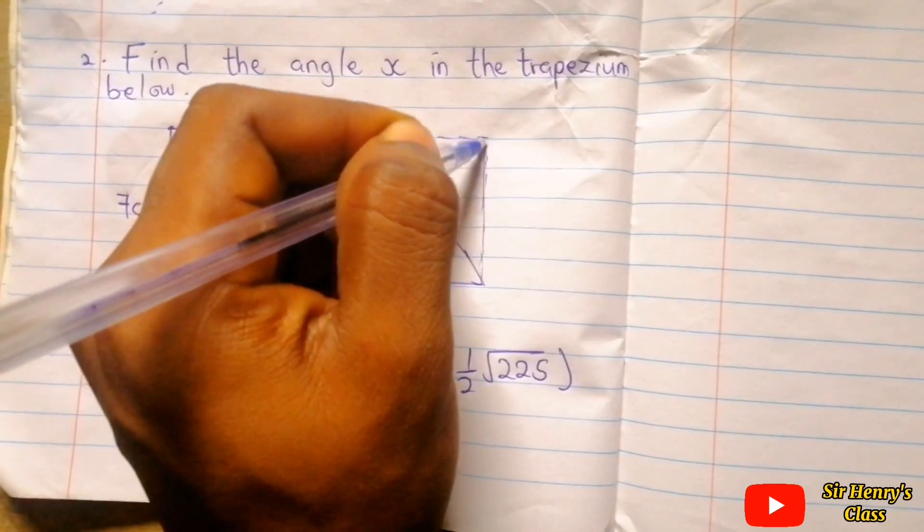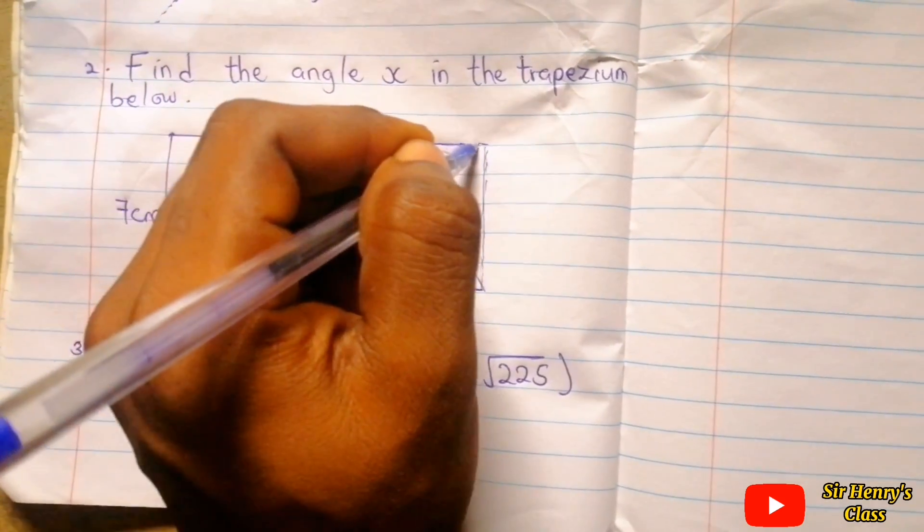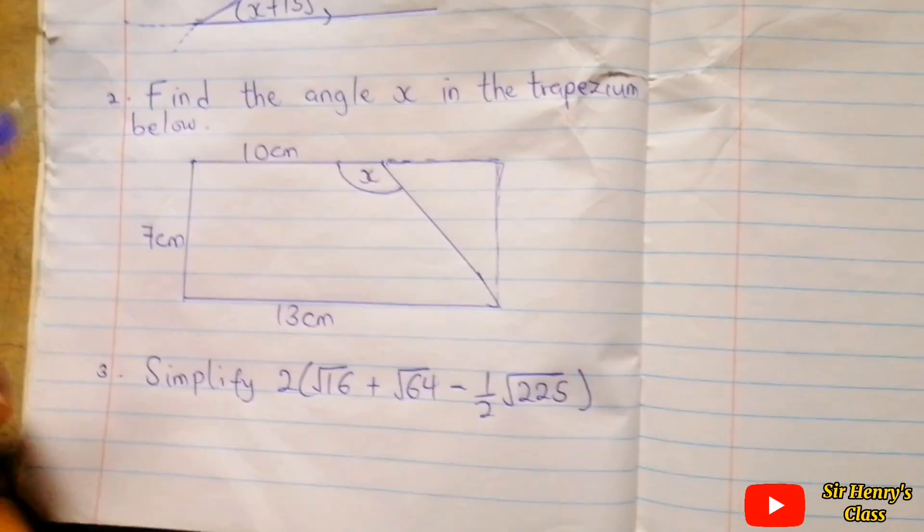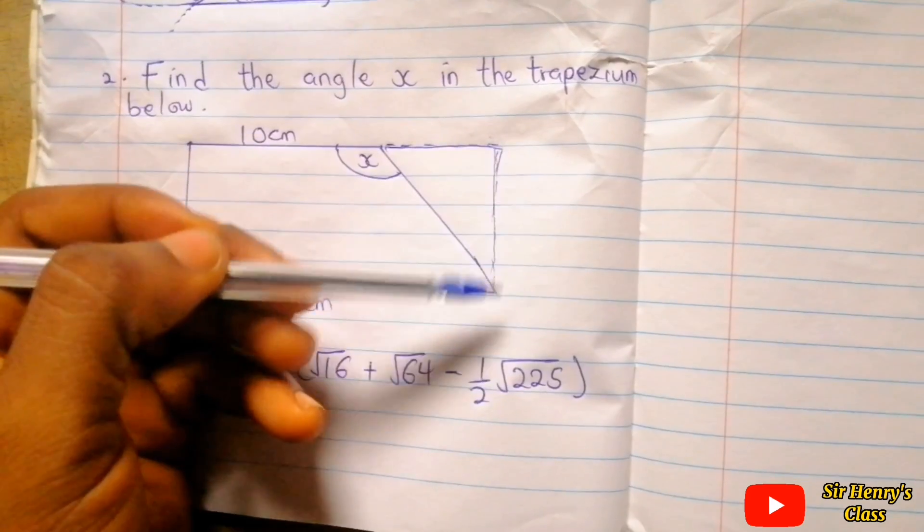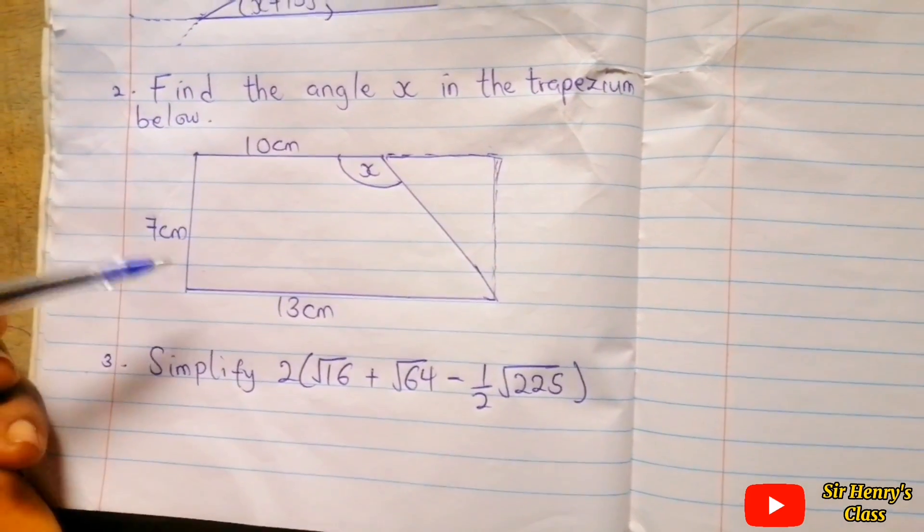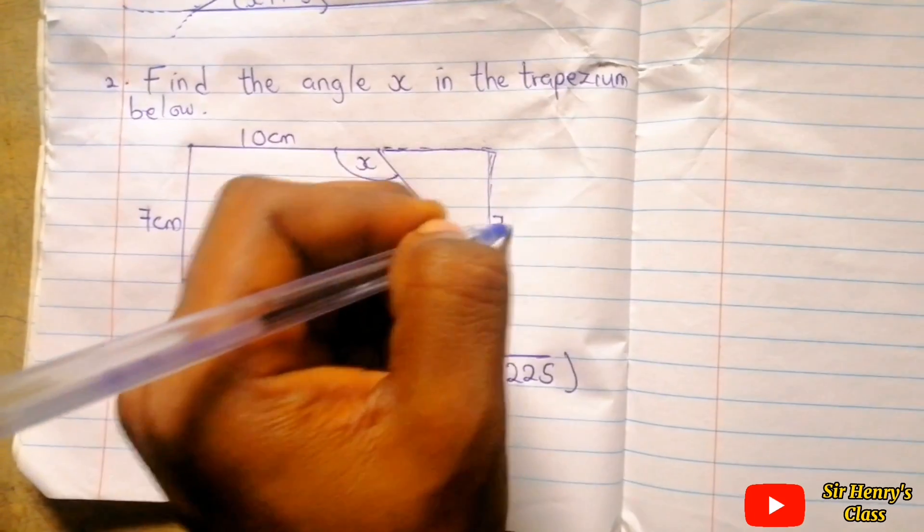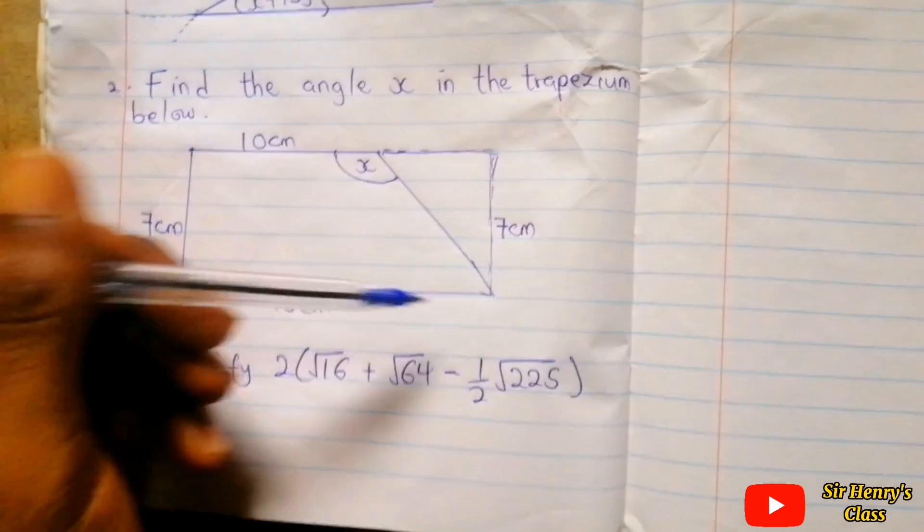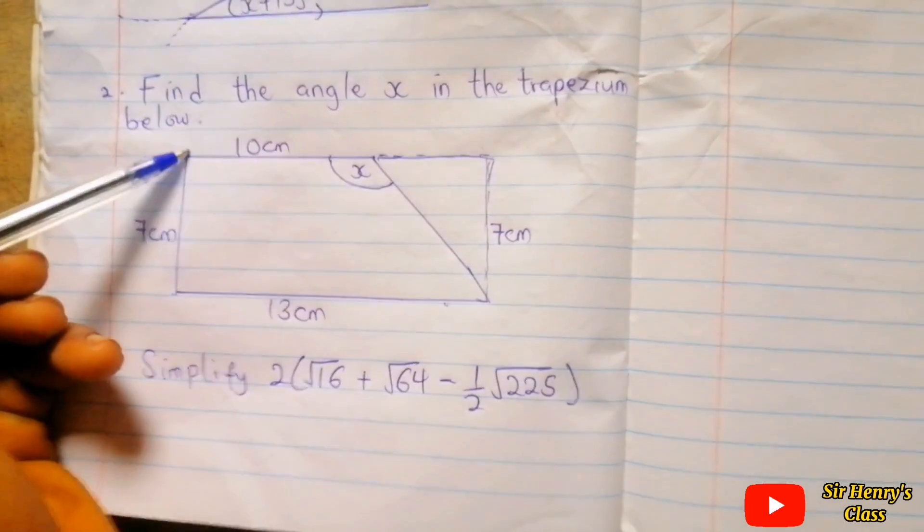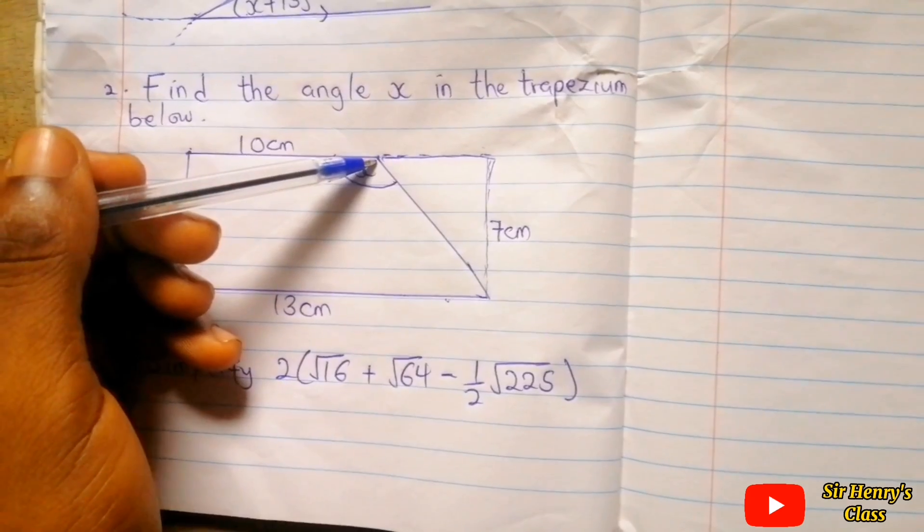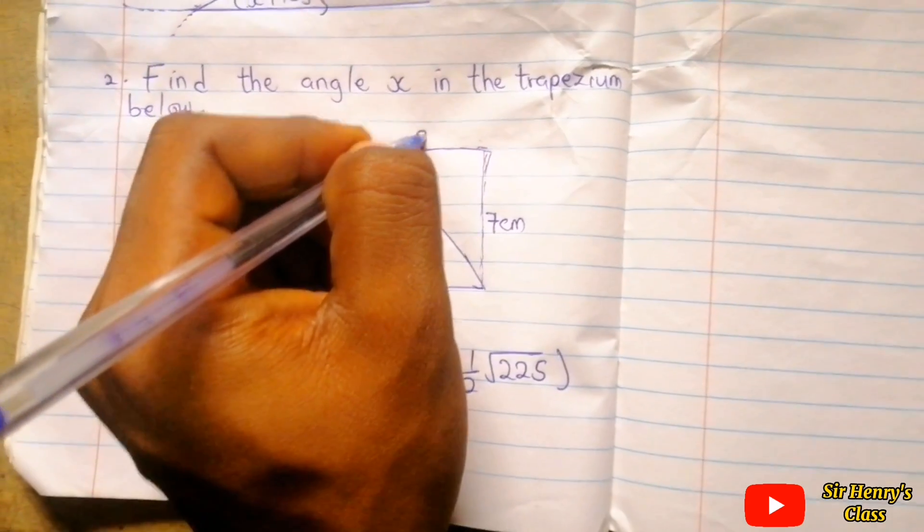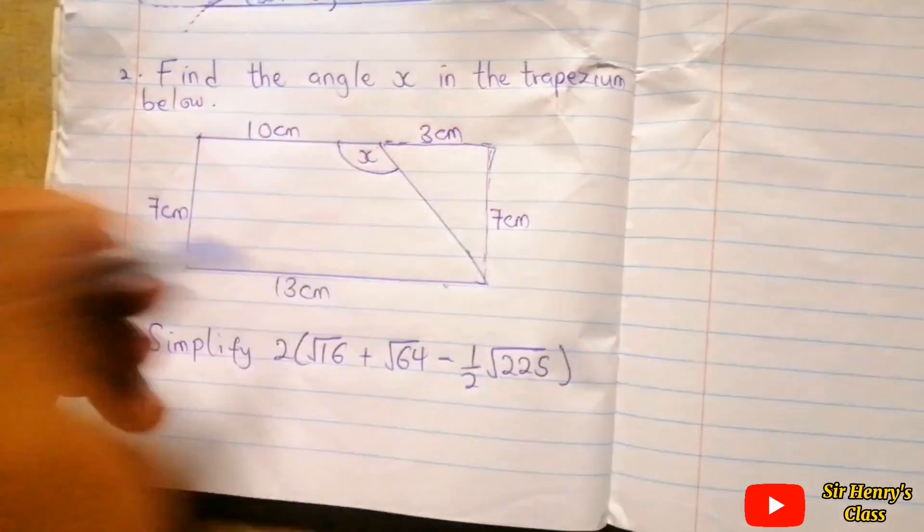Look at it very carefully. This height here or this width is also the same as this width. So we can see this side is 7 centimeters. From this side to this side is 13, and this side to just this side is 10. So we can see the remaining is 3, so that we can also get 13 over here.